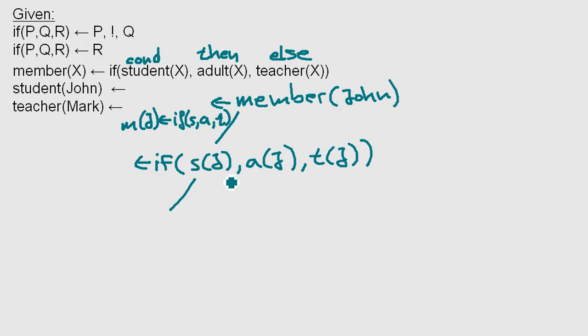And we set P to student John, Q to adult John, and R to teacher John. Let's make this rule number one, this rule number two, three, four, five. And we apply rule number one. Then we, of course, as we learned, end up with the thing on the right. And as P, this P was the student, then we end up with this one. Student John.